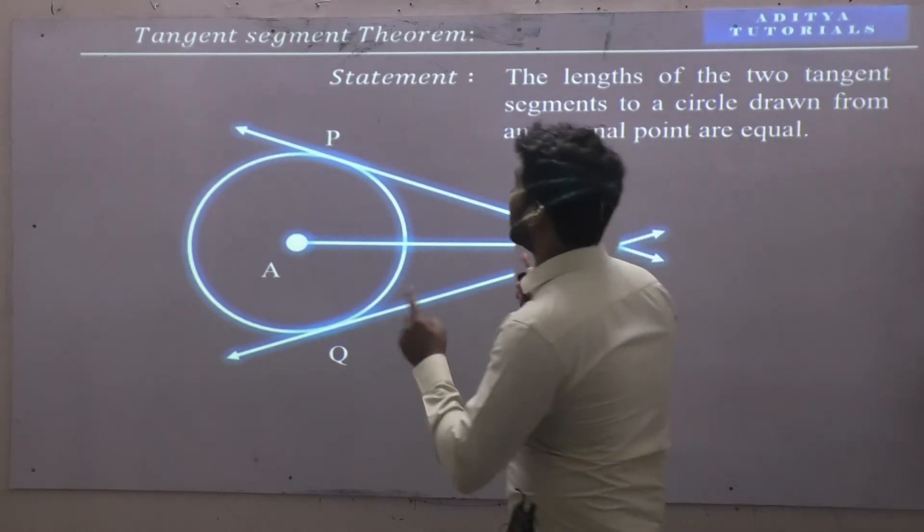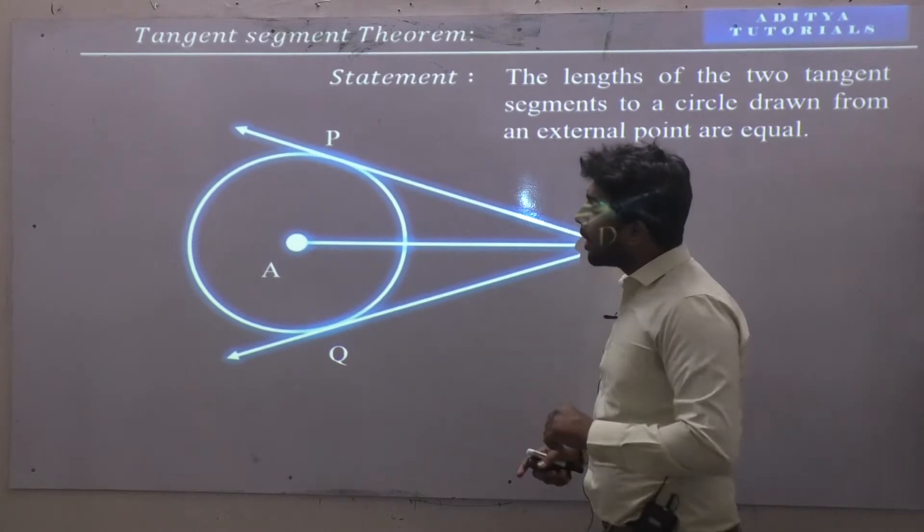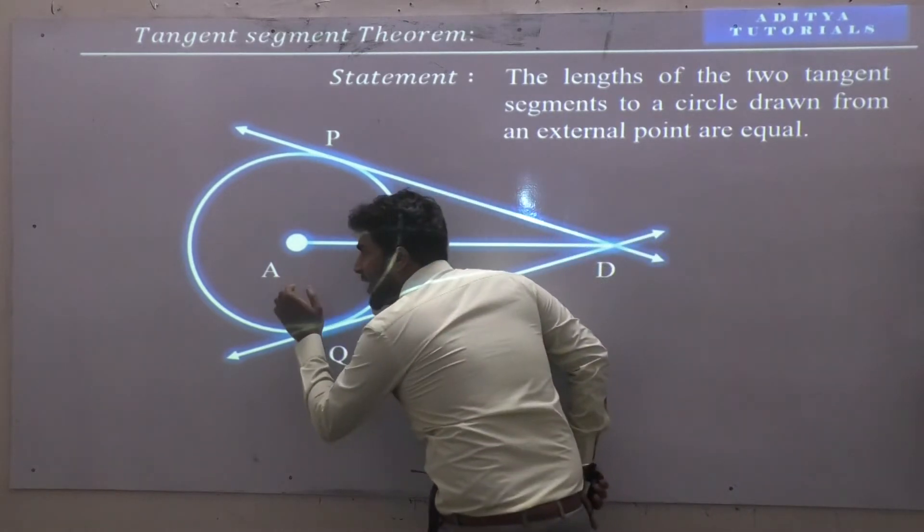Talking about tangent segment here, we have given it in the figure. And the circle is drawn to center A.